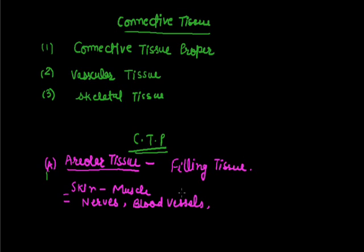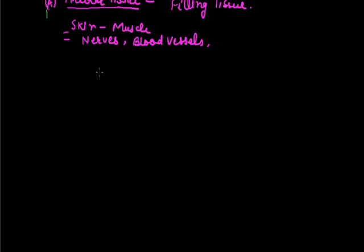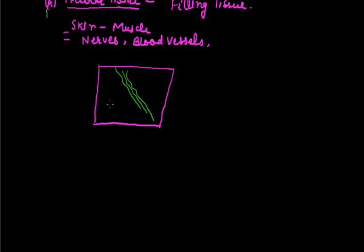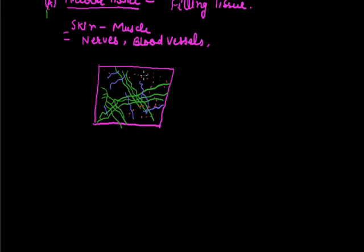Areolar Tissue is quite abundant in the body. It can be represented by white and yellow fibers arranged in a network-like structure. Multiple white fibers form the network, and some yellow fibers are also present. All of these are embedded in a matrix — a liquid intercellular fluid — in which yellow elastin fibers and white inelastin fibers are both present.